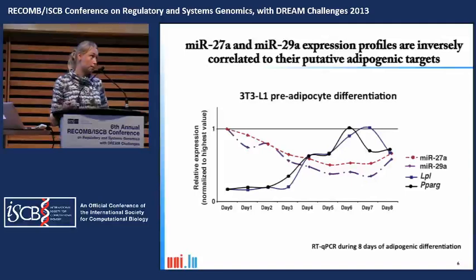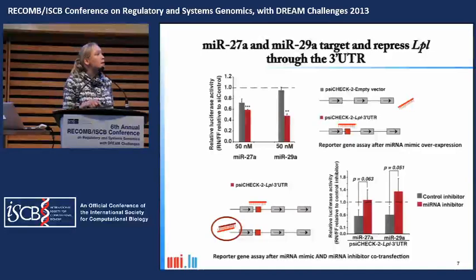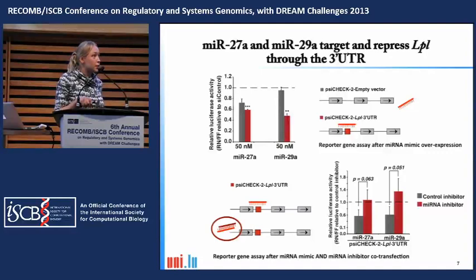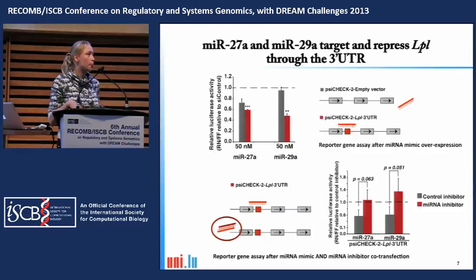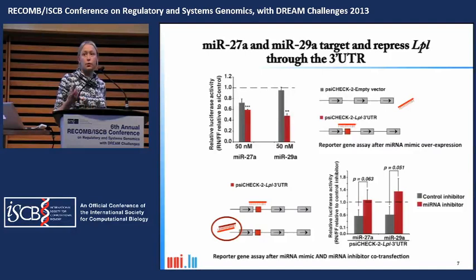To functionally test whether the microRNAs bind the 3' UTR of LPL, the entire 3' UTR was cloned into a dual reporter gene vector, with one reporter coupled to the 3' UTR. When co-transfected with the microRNAs in an artificial system, both miR-27A and miR-29A significantly downregulate reporter gene expression, indicating binding of the 3' UTR. Co-transfection with microRNA inhibitors (antagomirs) releases this effect, further confirming microRNA targeting of the 3' UTR.